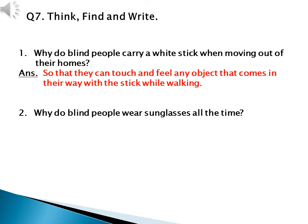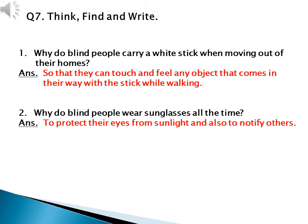Number two: why do blind people wear sunglasses all the time? Answer: to protect their eyes from sunlight and also to notify others — they wear sunglasses to protect their eyes from sunlight and also to let others know that they are blind.